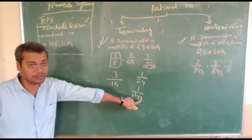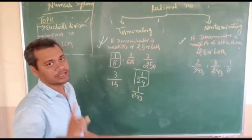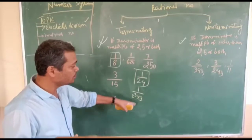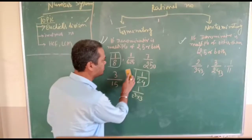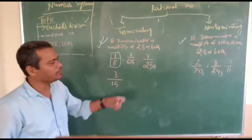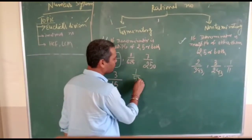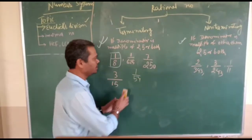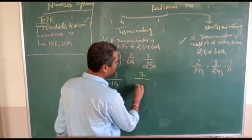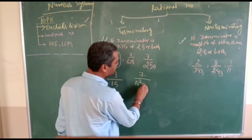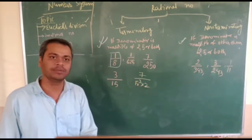Since 3 came in the denominator, 1/24 is non-terminating. The denominator should be only and only a factor of 2, 5, or both. Similarly, 1/625 = 1/5⁴ — in the denominator only 5 came, so it is terminating. What about 7/250? That is 7/(5³ × 2). You can clearly see the denominator is only a multiple of 2 and 5, so the number is terminating.